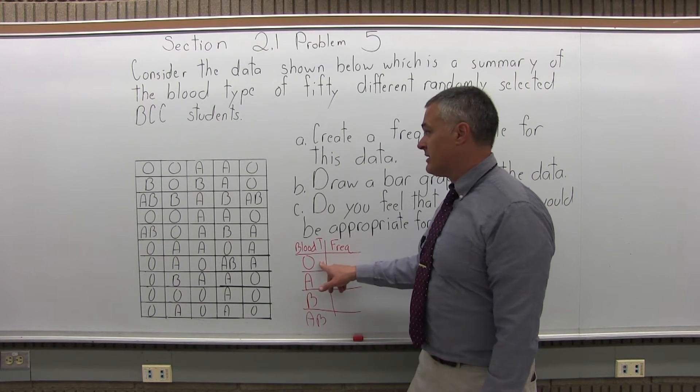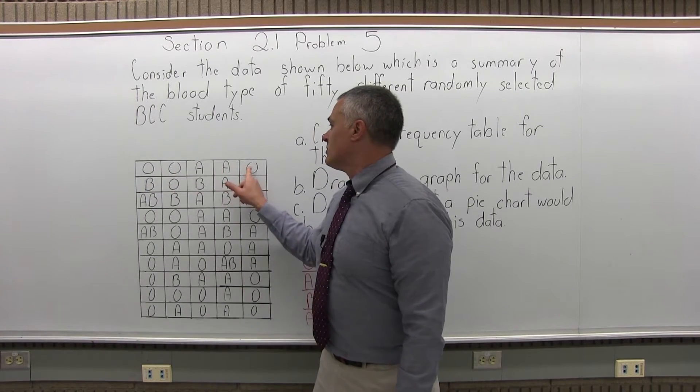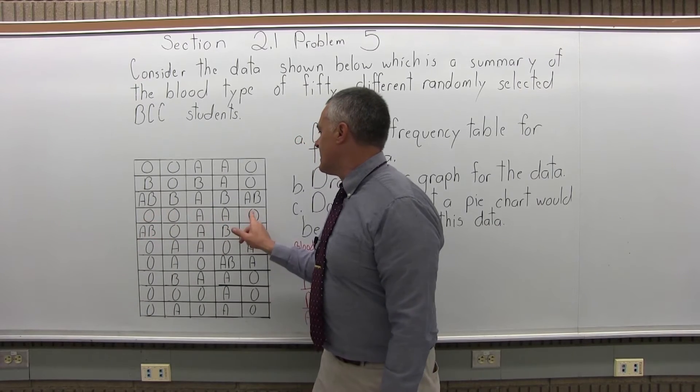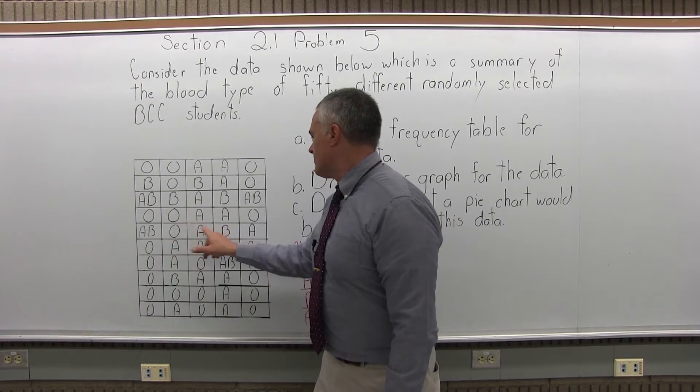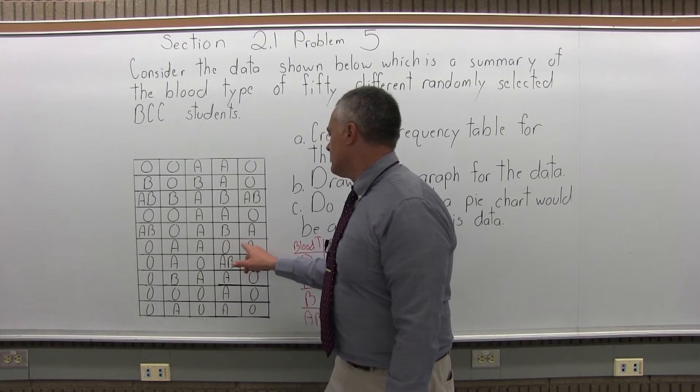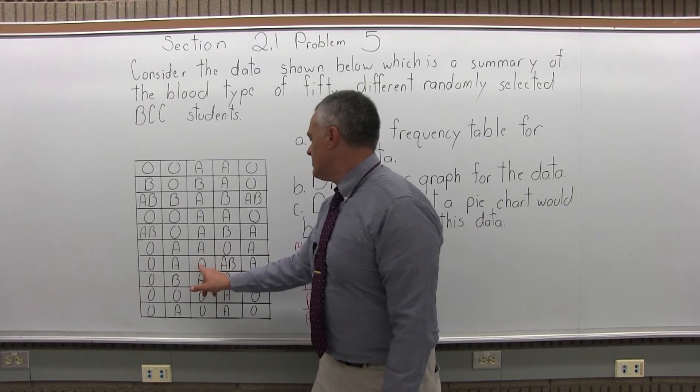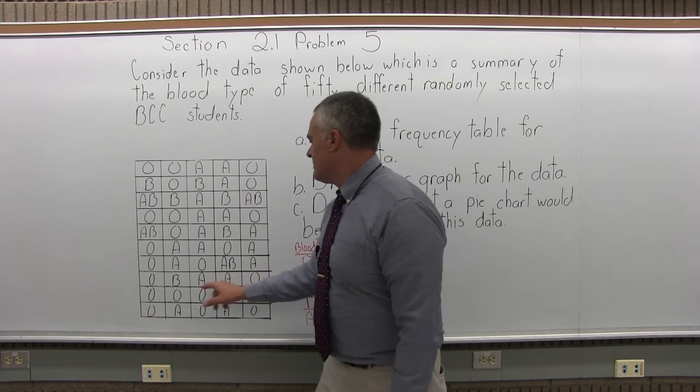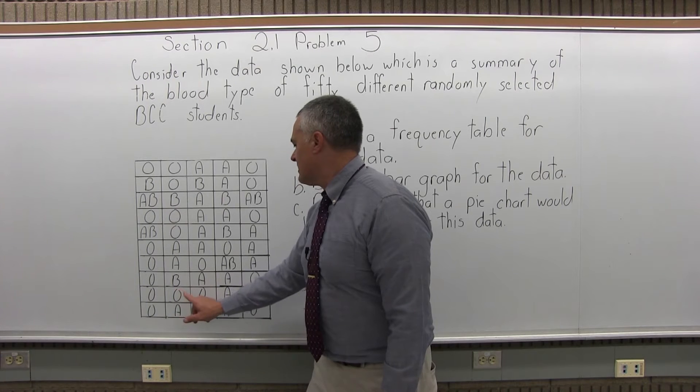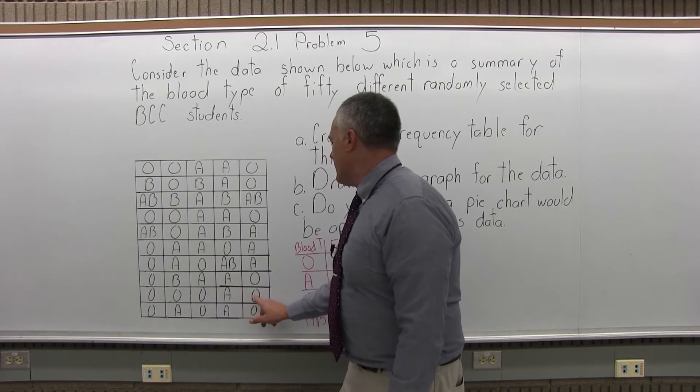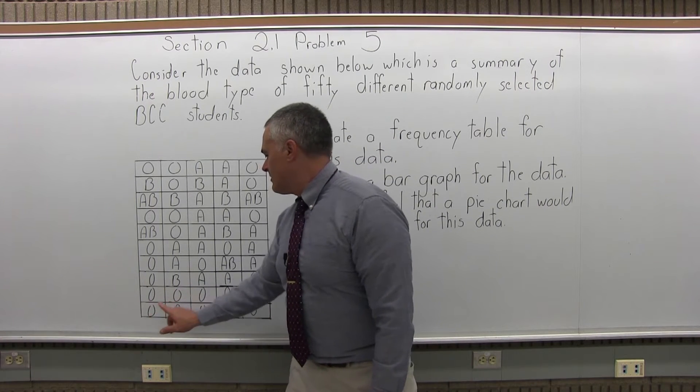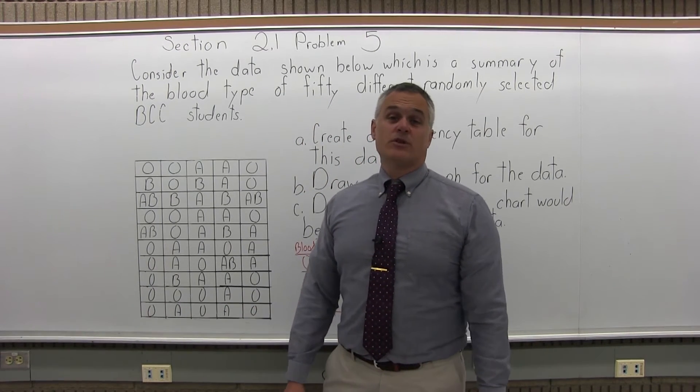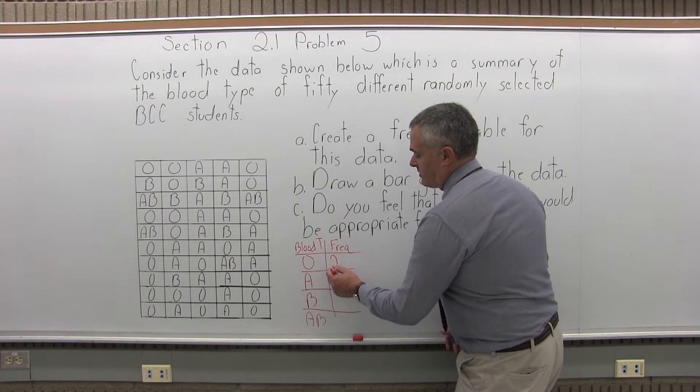So count carefully, blood type O: 1, 2, 3, 4, 5, 6, 7, 8, 9, 10, 11, 12, 13, 14, 15, 16, 17, 18, 19, 20, 21, 22. Blood type O showed up 22 times. So that would be the frequency.